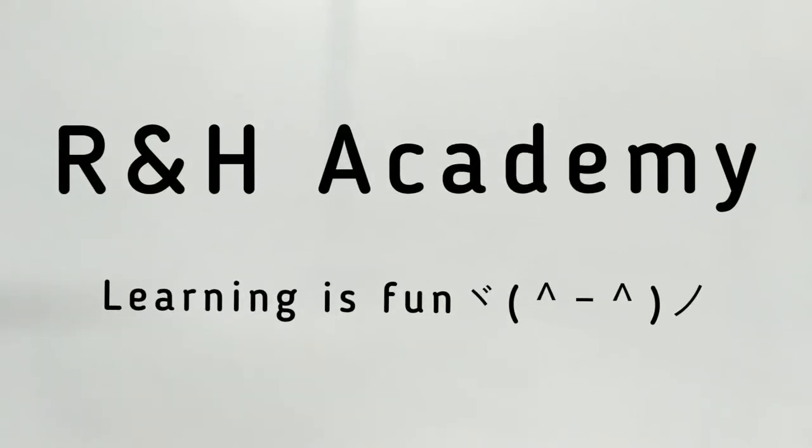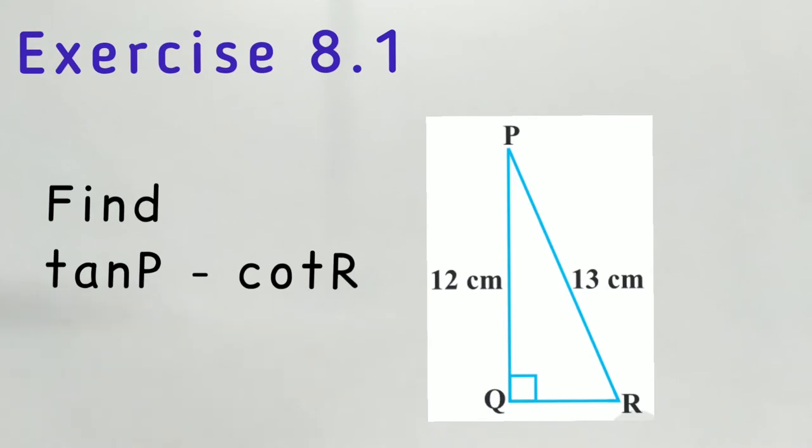Welcome to RNHL and P channel. Question 2 of exercise 8.1 says, in figure 8.13 find tan P minus cot R.